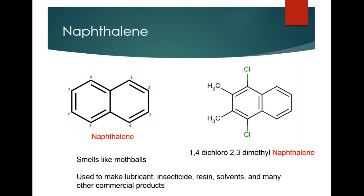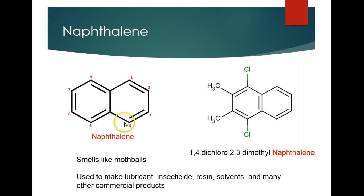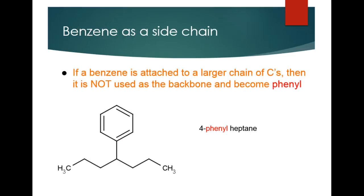Coming down to the end, we have one more special benzene name: naphthalene. Naphthalene is two benzene molecules attached to each other, and has the unique property of smelling like mothballs. To name it, you pick one of the outside carbons to start numbering on, then choose clockwise or counterclockwise. We skip the two shared carbons since they already have four bonds and nothing can attach to them. For an example, we call the backbone naphthalene, pick carbon one, and go counterclockwise: positions one, two, three, and four — giving us 1,4-dichloro-2,3-dimethylnaphthalene.